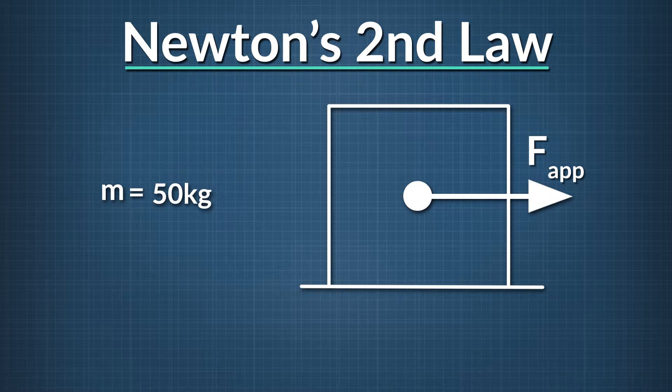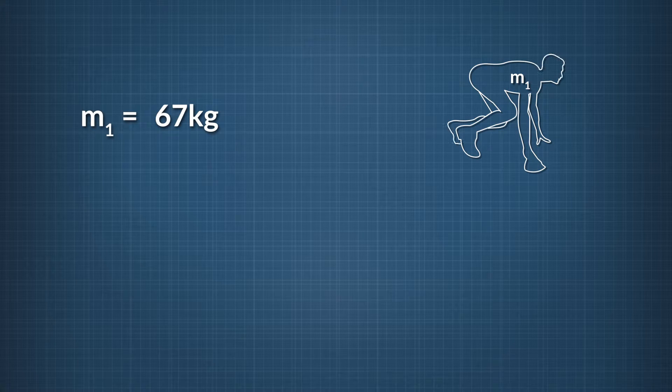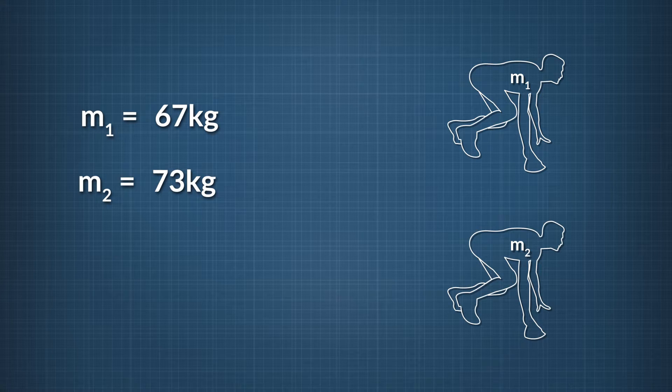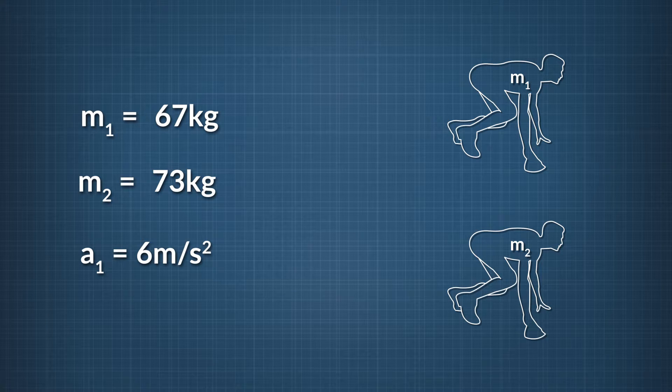Let's look at another example. Two runners line up to start a race. The first runner has a mass of 67 kilograms, while the second runner's mass is 73 kilograms. If runner 1 has an acceleration off the starting block of 6 meters per second squared, what force does runner 2 need to exert in order to have the same acceleration?